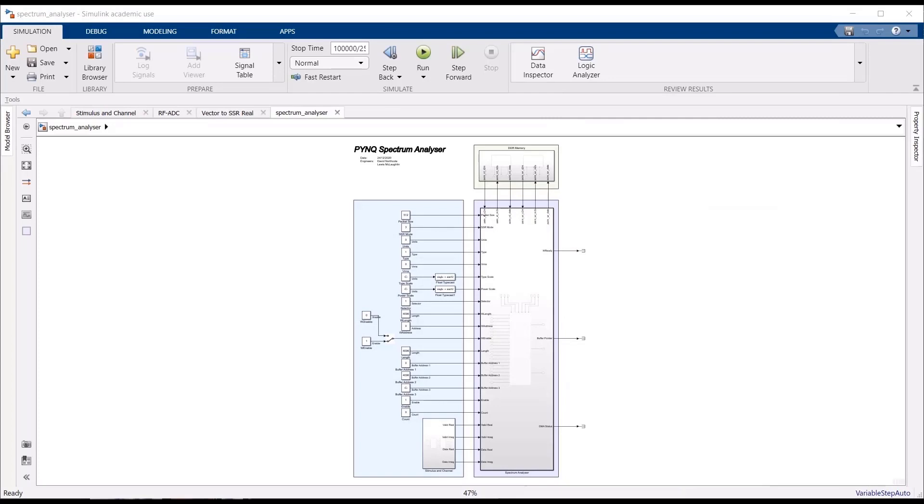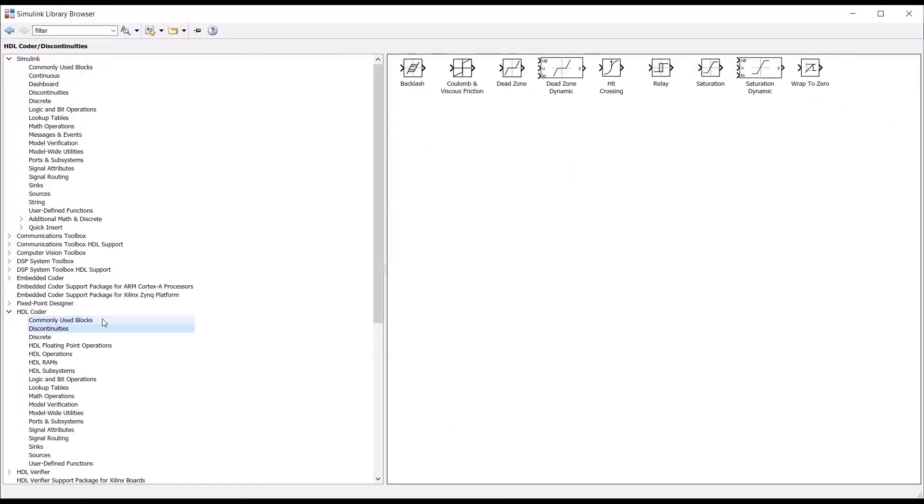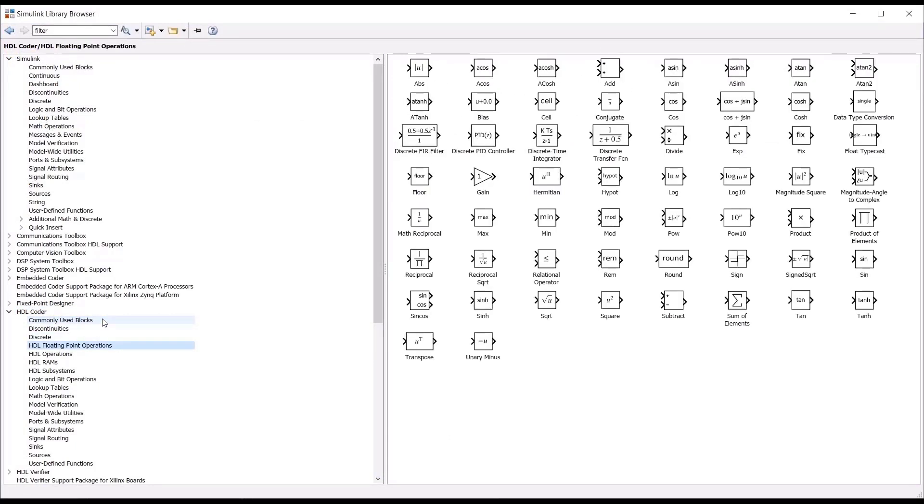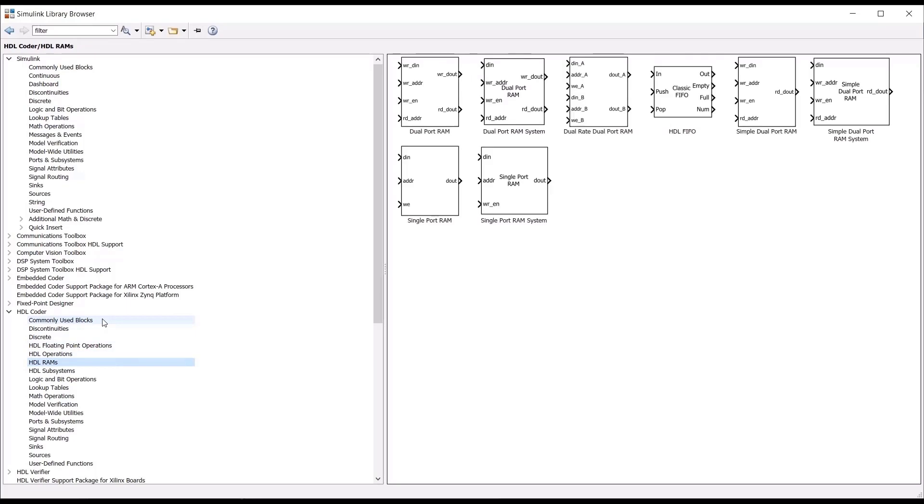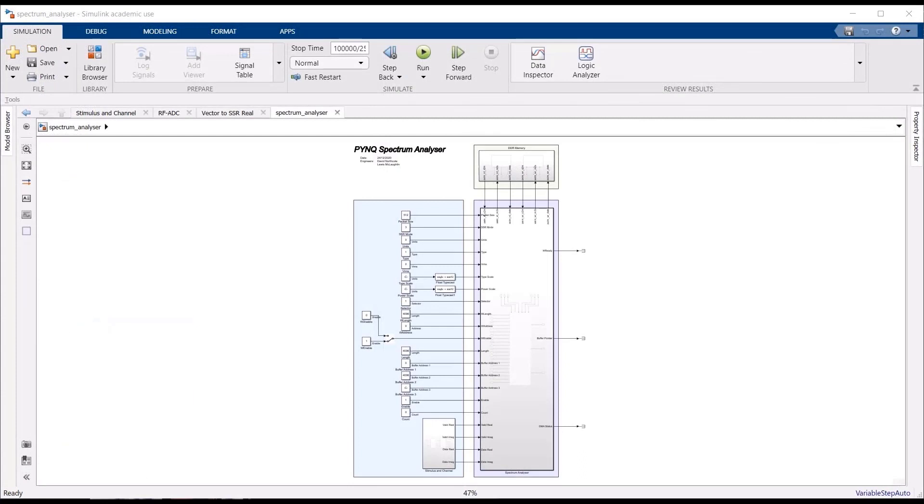MathWorks HDL Coder is another excellent tool for designing and developing HDL architectures. Similar to System Generator, MathWorks HDL Coder is a block-based design tool containing a vast library of HDL-optimized blocks for custom user designs. A significant appeal of using HDL-Coder is its excellent simulation performance. This allows designers to rapidly perform tests and produce results.